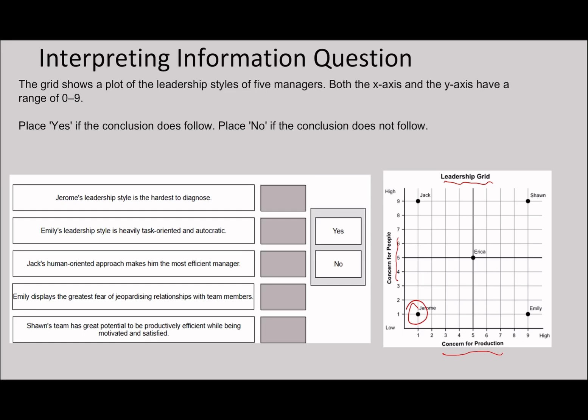Jerome's leadership style is the hardest to diagnose. Well, it says Jerome is here. You can see Jerome has very low concern for people and very little concern for production. I'd say it's quite easily definable. You can see Sean is the exact opposite. I would argue that Erica probably is the hardest to place because she's dead center, quite average for production and concern. For that reason, I would say hardest to diagnose, this is going to be no.